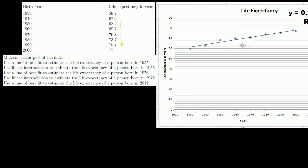The first thing they ask us to do is to make a scatter plot of the data. I did this on Excel ahead of time, and this is what I got. As you can see, in 1930 it was 59.7, in 1940 it was 62.9. These blue dots are just plotting each of these data points. So I just went ahead and plotted all of them.